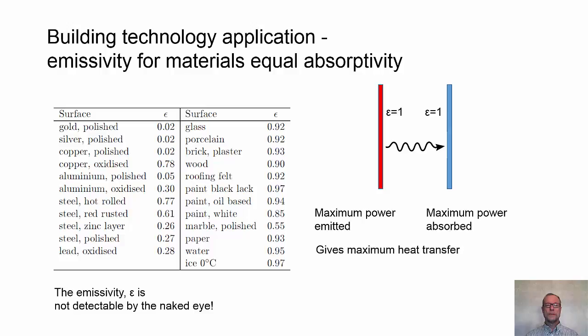Here in the table we have different values for different materials, and we see with shiny polished metal surfaces has a very low emissivity, so they emit, they're poor emitters of radiation, and they're also poor in order to absorb radiation.